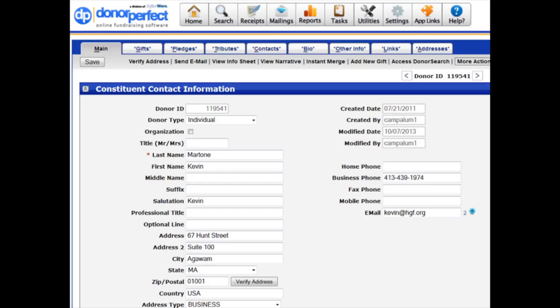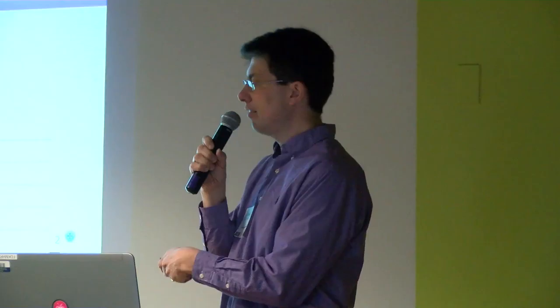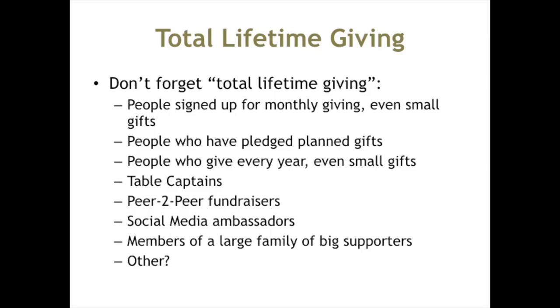You can segment on any data in your system — by location, demographic information, interests, or capacity to give. If you're doing an event in Vermont, you could send invitations only to people in Vermont. If you do prospect research, basically any data in the system can be used to segment your database. The key is to use it consistently. If you're not filling that information in for everyone, your segments won't work and you won't be able to reach everyone you want to.